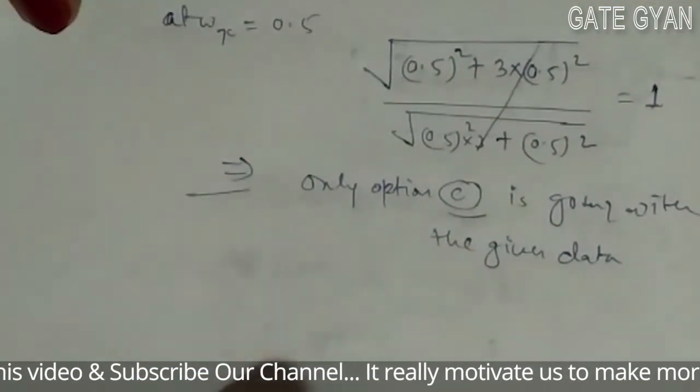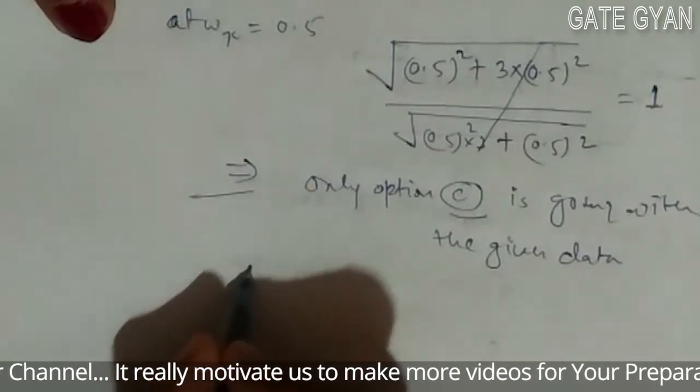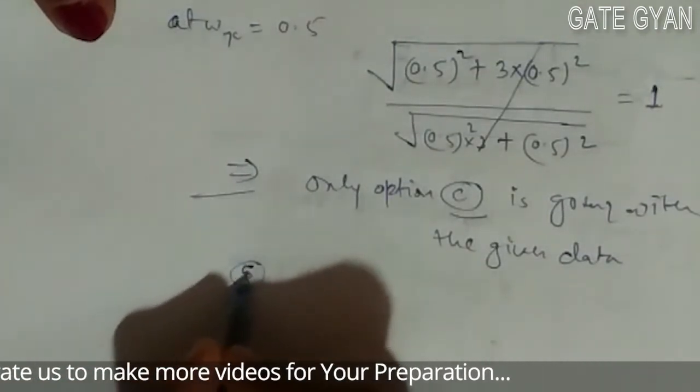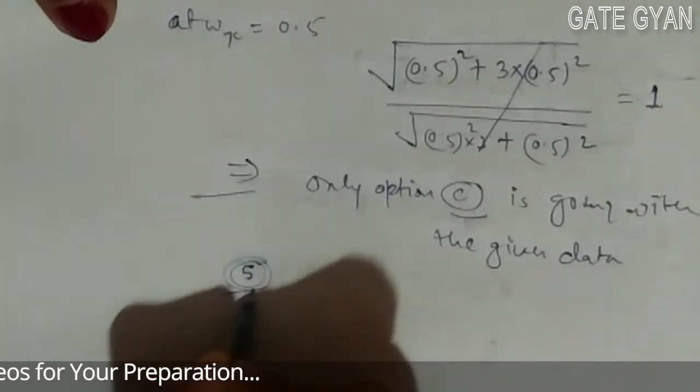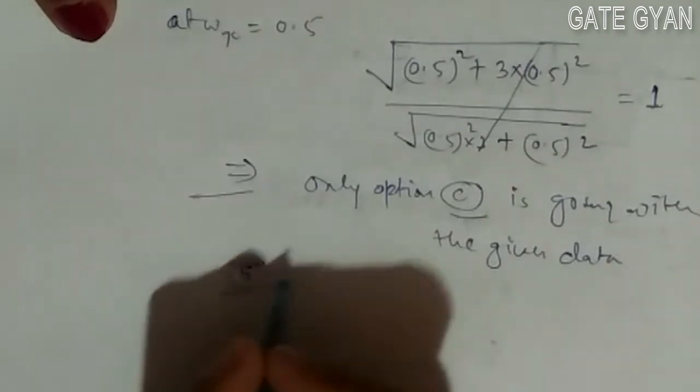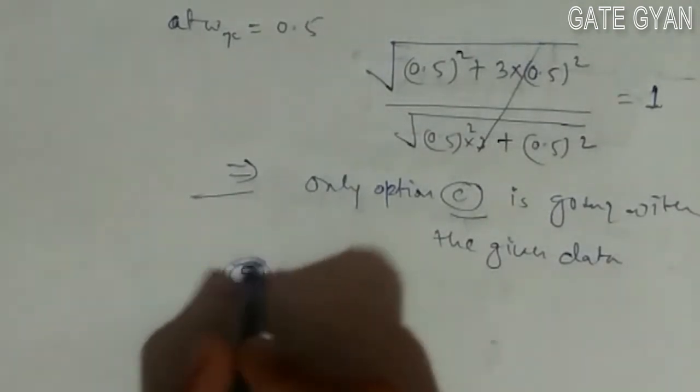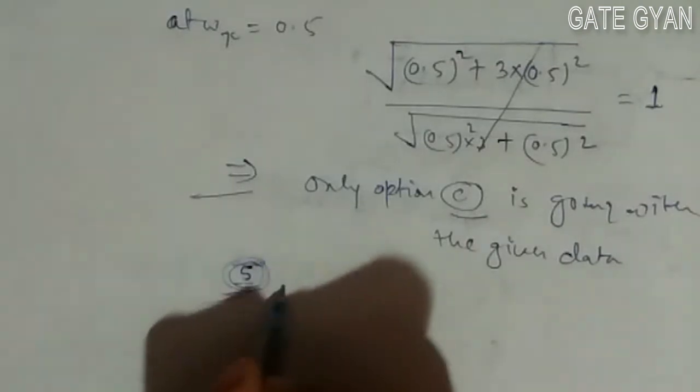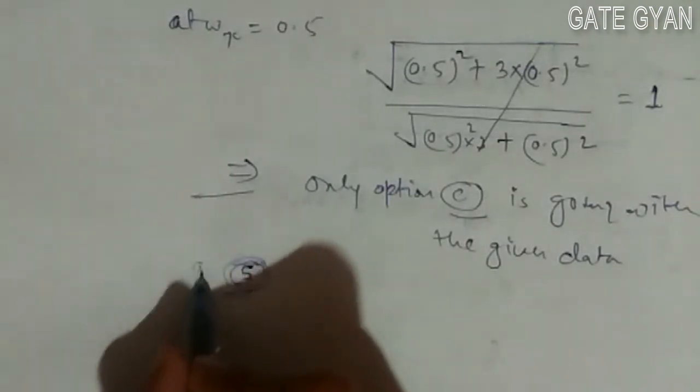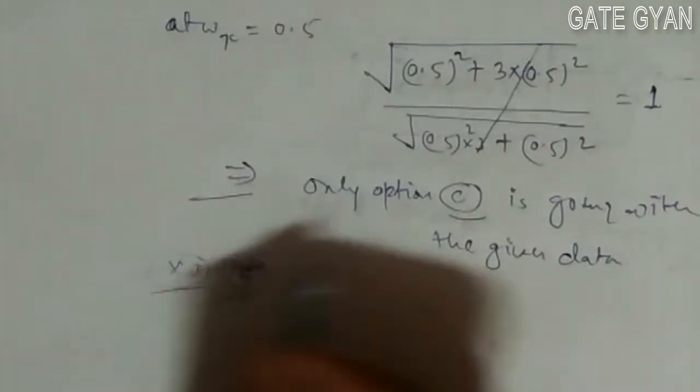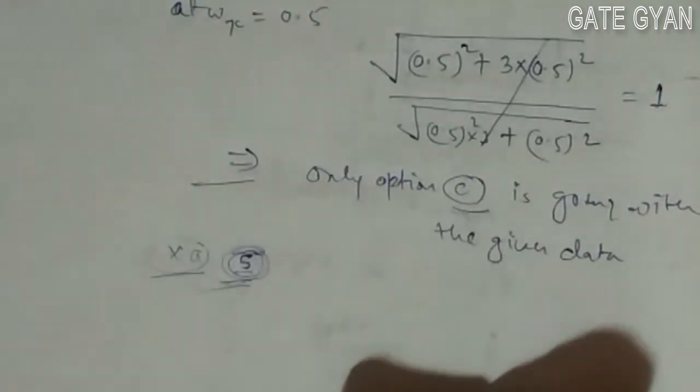When checking option A, there is an extra gain of 5, which means at ωgc = 0.5, the gain cannot be 1. So option A cannot be the answer. Therefore, the answer is option C. Thank you.